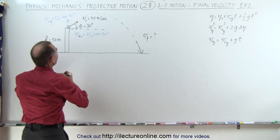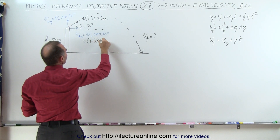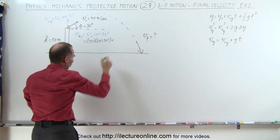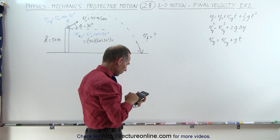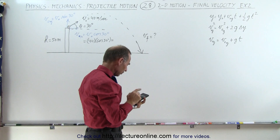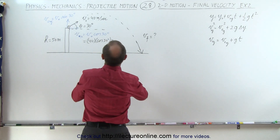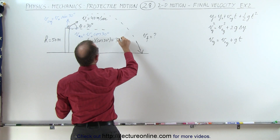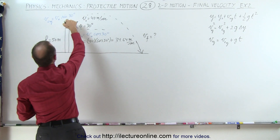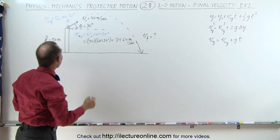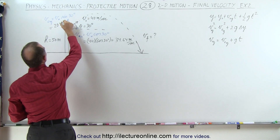For the x direction, that equals 40 times the cosine of 30 degrees, which gives 34.64 meters per second. In the y direction, the sine of 30 is one half, so that equals half of 40, or 20 meters per second.